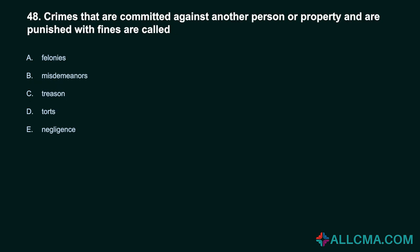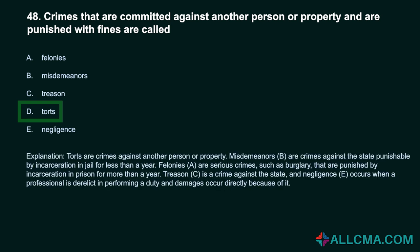Question 48: Crimes committed against another person or property and punished with fines are called: a) felonies, b) misdemeanors, c) treason, d) torts, e) negligence. Correct answer: D, torts. Torts are crimes against another person or property. Misdemeanors are crimes against the state punishable by incarceration in jail for less than a year. Felonies are serious crimes such as burglary, punished by incarceration in prison for more than a year. Treason is a crime against the state. Negligence occurs when a professional is derelict in performing a duty and damages occur directly because of it.